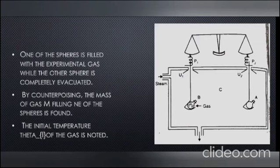One of the spheres is filled with the experimental gas while the other sphere is completely evacuated. By counterpoising, the mass of the gas M1 filling one of the spheres is found.